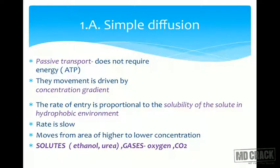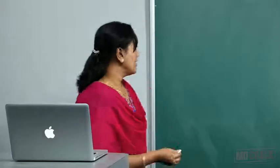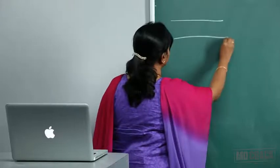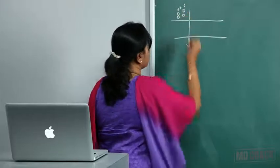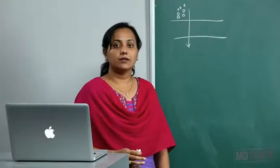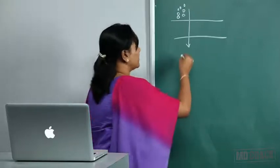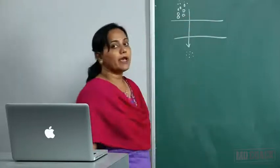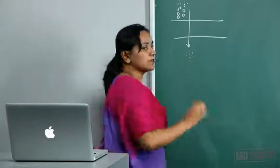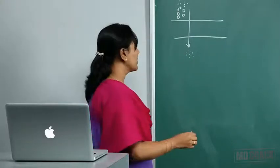Starting with simple diffusion — it is a passive transport, meaning it does not require ATP. Substances move across the membrane without the use of energy. What drives this movement across the lipid membrane is the concentration gradient. Something which is present in higher concentration on one side will simply diffuse across the membrane. This type of transport does not require energy.